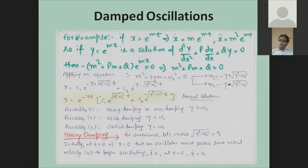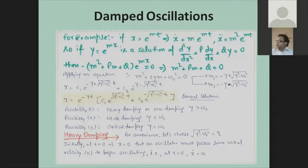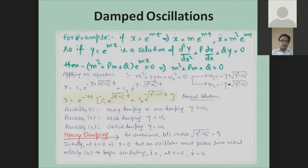Looking at this general solution, we realize it is basically an interplay between the damping-affected new frequency and the natural frequency of the oscillator — a very interesting interplay. This leads us to think about three categories of damping: can damping be over-effective, under-effective, or can it equate the natural frequency? These three possibilities are: heavy damping, weak damping, and critical damping.